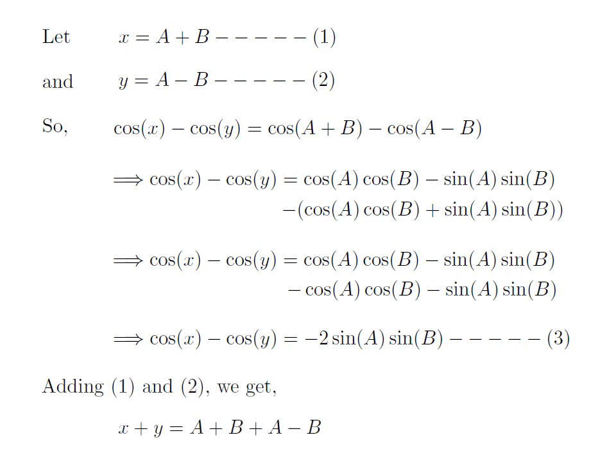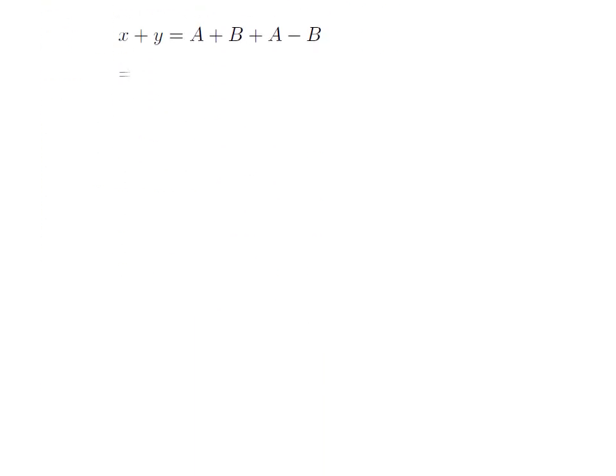Now let's find out the value of a and b in terms of x and y. First, add expressions 1 and 2. So we get x plus y is equal to a plus b plus a minus b. In the above expression, b minus b will cancel out, so we are left with a plus a. So we have x plus y is equal to two times of a. Taking 2 to the left, we get a is equal to x plus y divided by 2.